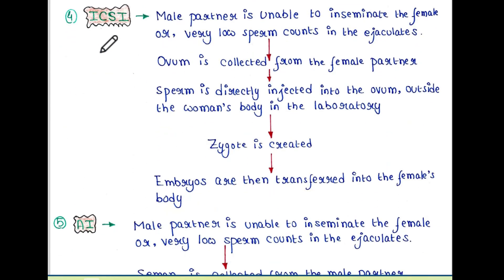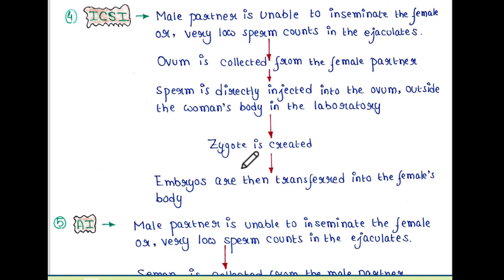Next process is ICSI. Here the male partner is unable to inseminate the female, or there are very low sperm counts in the ejaculate. So the ovum is collected from the female partner and the sperm is directly injected into the ovum outside the woman's body in the laboratory. This technique assists fertilization of the ovum by the sperm when it is not possible inside the woman's body, and the resulting zygote and embryos are then transferred into the female's body.